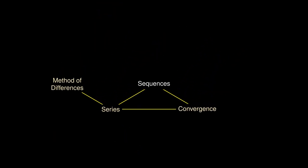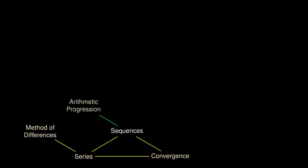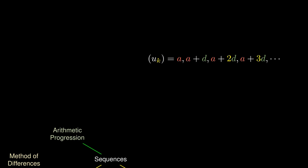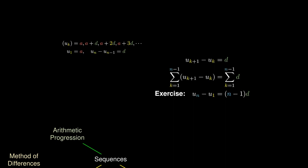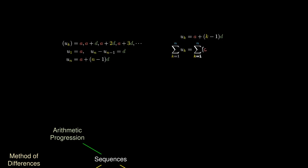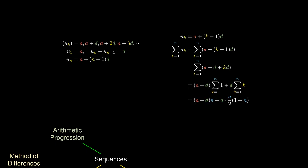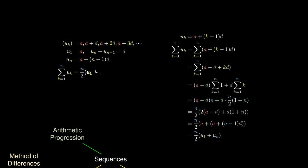A really useful type of sequence is the arithmetic progression, where you start with a number a and add a constant difference d each time. The difference between any two consecutive terms must be d, so u sub k+1 minus u sub k equals d. Using the method of differences, we can show u_n minus u_1 equals (n minus 1) times d. Doing a bit of algebra, we obtain the general formula for the nth term of an arithmetic progression. We can then sum both sides and apply previously derived results to obtain the formula for the sum of the first n terms.